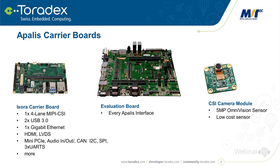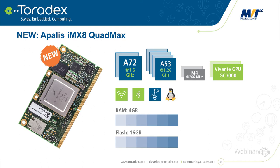The TK1 module we'll use features a quad-core Cortex-A15 running at over 2 GHz, with a strong GPU featuring 192 CUDA cores. I also want to mention the newest member of the Apalis family: the Apalis i.MX8 QuadMax, using the latest i.MX8 SoC from NXP. Channel availability is planned for Q4, but there's an early access program on our website requiring an NDA. MVTec is already one of our partners with these modules.